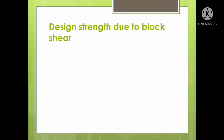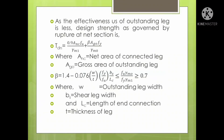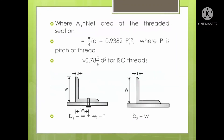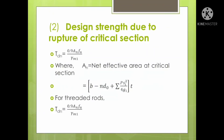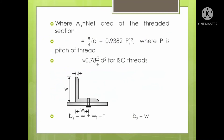That was the second design strength — design strength due to rupture of the critical section. The critical section is usually where the bolting has been done, as rupture typically occurs at that location.